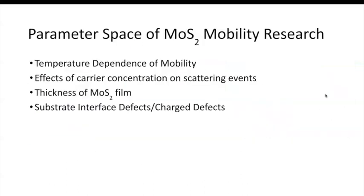The parameter space for studying mobility in MoS₂ is wide, including temperature dependence of mobility, effects of carrier concentration, thickness, substrate, interface defects, charge defects, and more. Once we understand mobility, we need to understand how to improve it through defect engineering or different growth processes, which will be discussed by fellow classmates in the next slides.